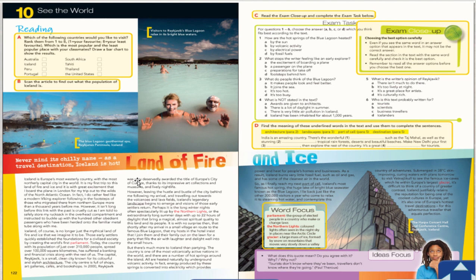What is the title of this passage? The title is "Never Mind Its Chilly Name — As a Travel Destination, Iceland Is Hot: The Land of Fire and Ice." Iceland is known by this name — the land of fire and ice. It is home to some of the largest glaciers in Europe and some of the world's most active volcanoes. In this passage you will find lots of information about Iceland.